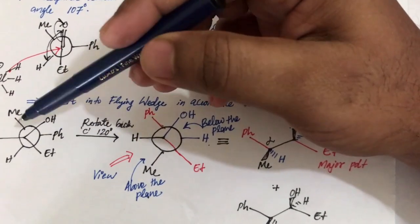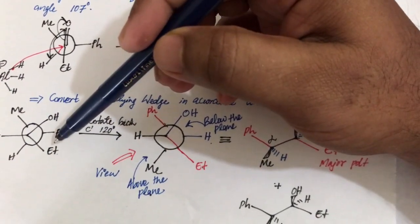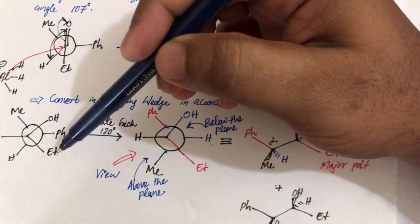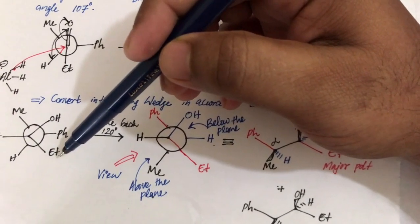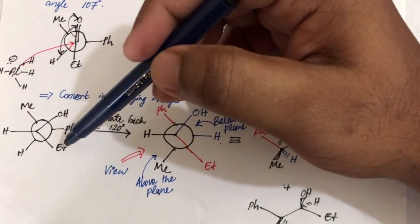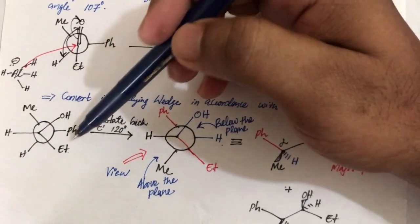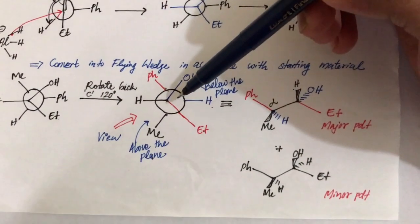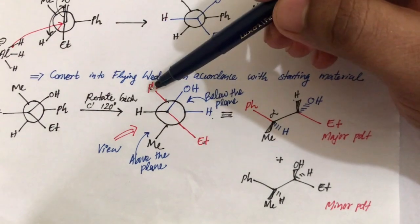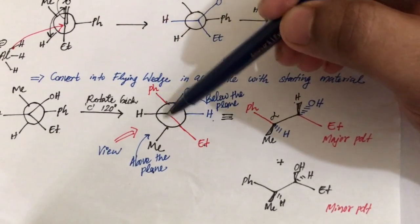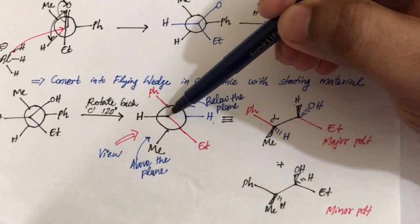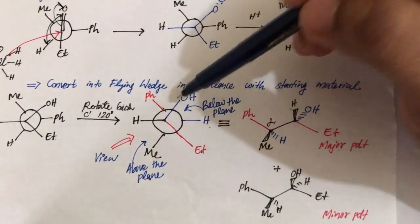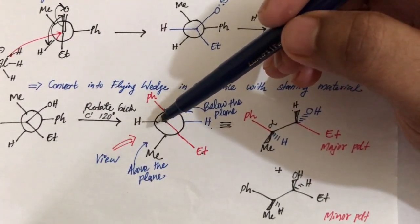To make the conversion, I want Ph and Et to be coplanar — meaning in the same plane of paper. Currently Et and Me are coplanar, so I rotate the back carbon by 120° to make Et and Ph coplanar. After rotating, Et and Ph are now in the plane of paper. We now have four substituents — two in one plane and two in another.